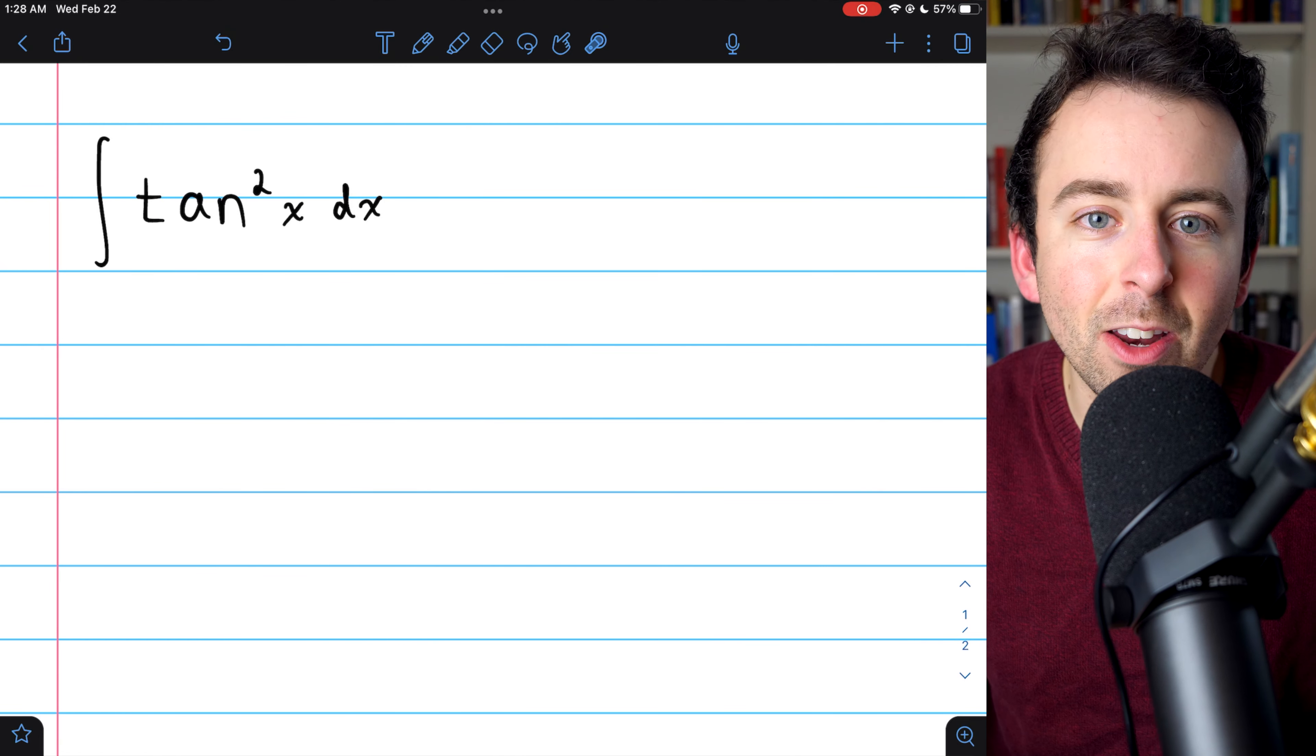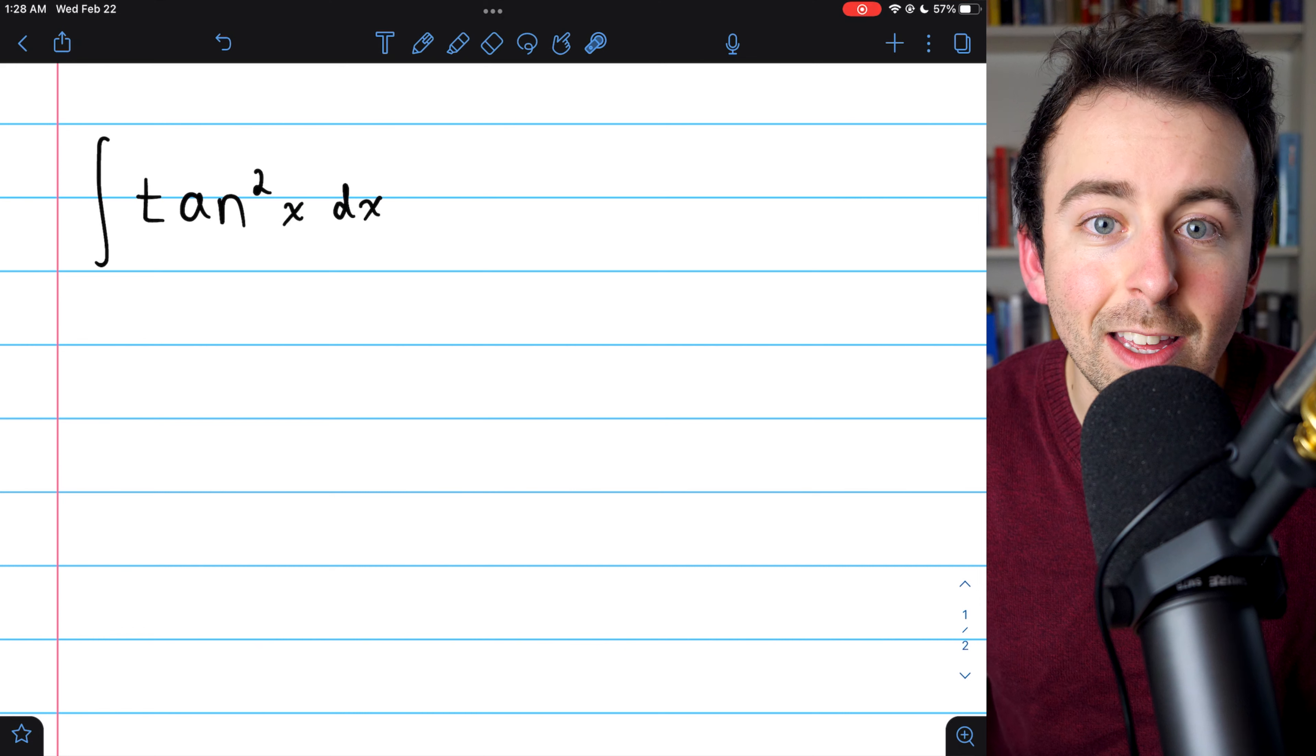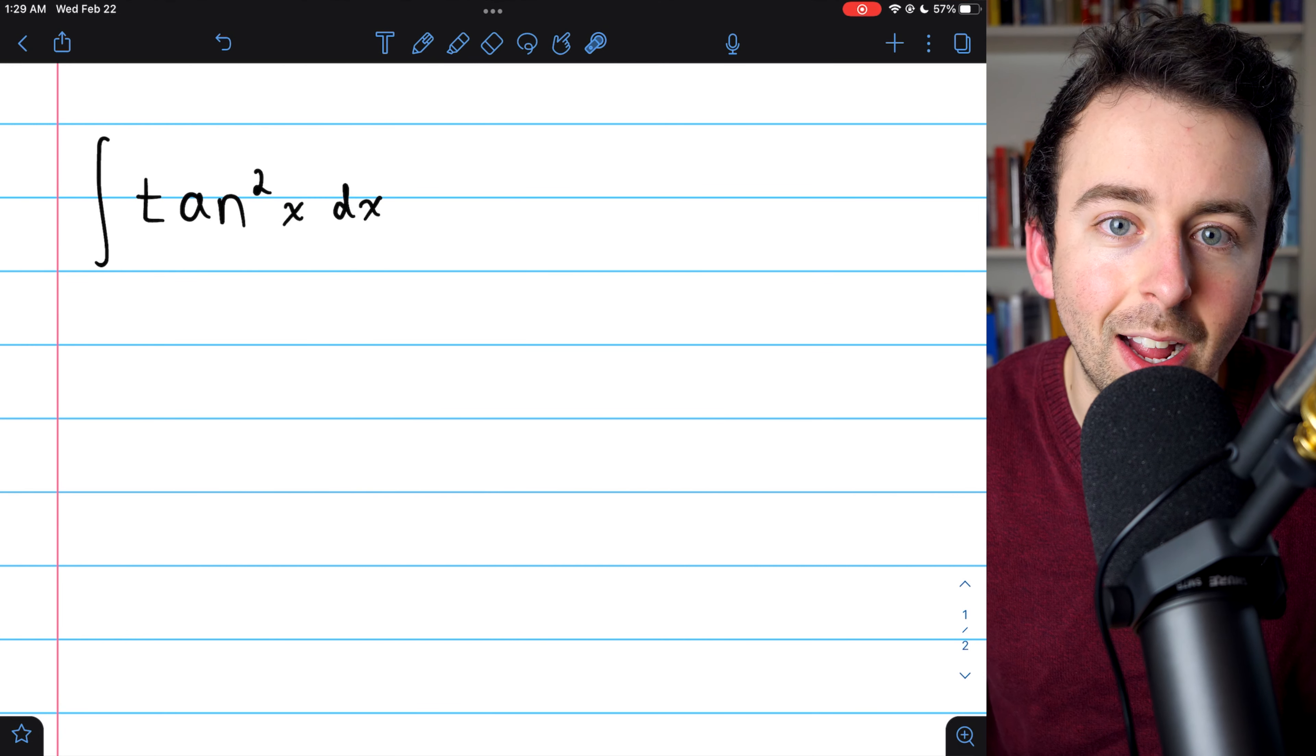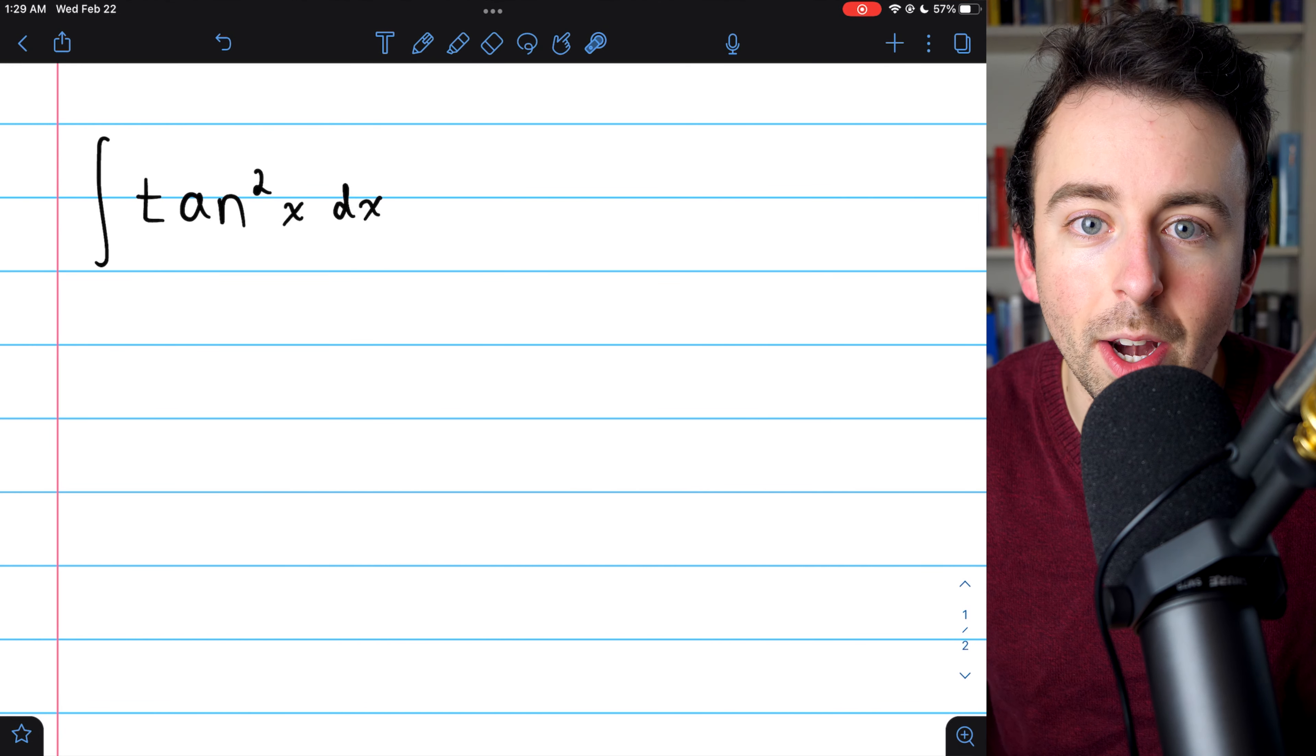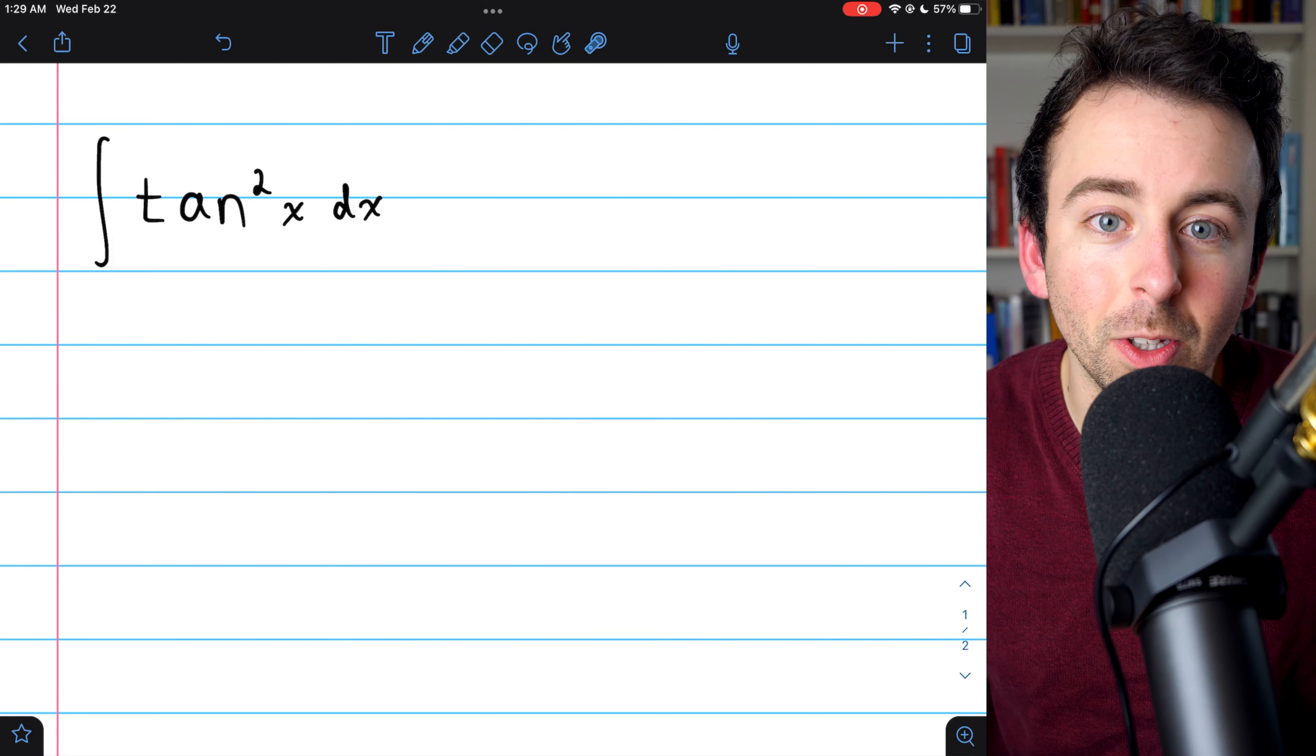By rewriting tangent as sine over cosine, and then applying the Pythagorean identity, sine squared plus cosine squared equals one, we'll be able to take care of this integral in no time.